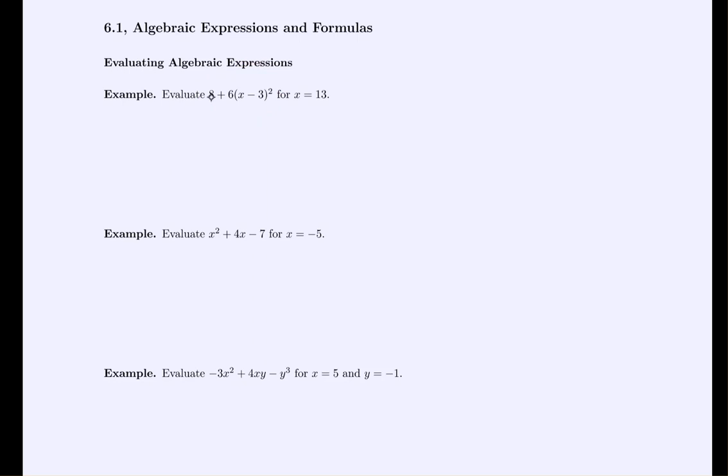So in our first example, we have the expression 8 plus 6 all times x minus 3 squared. And we're asked to evaluate that at x equals 13. So what that means is everywhere there was an x in the expression, we're now going to replace it with 13. So if we wrote that out, we would get 8 plus 6 times 13 minus 3 squared.